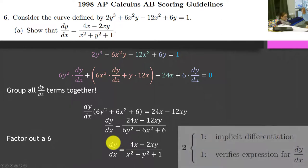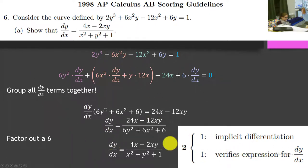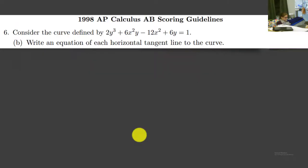How many points do we get for this? Two points — one for the differentiation and one for the verification. Okay, part B. Seven points left.